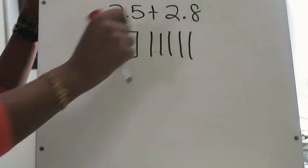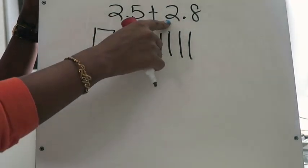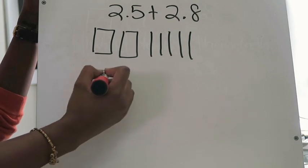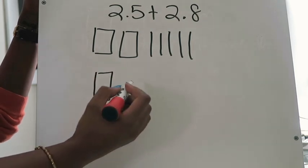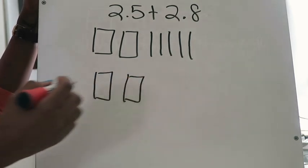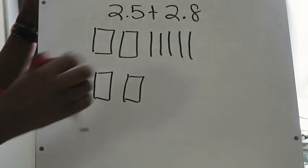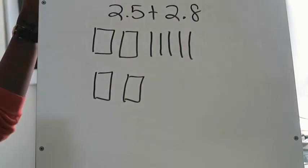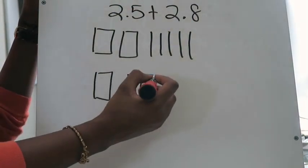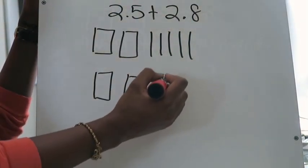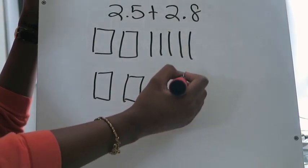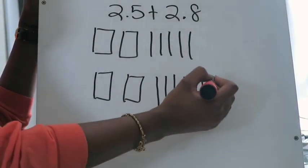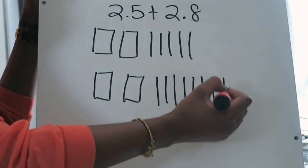Now I'm going to model 2 and 8 tenths. Again I have two wholes, so I'm going to put those here — one, two — and then I'm also looking at the fact that I have eight tenths, so I'm going to model eight tenths: one, two, three, four, five, six, seven, eight.